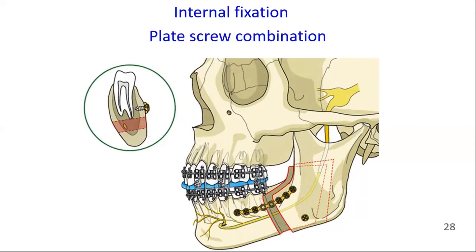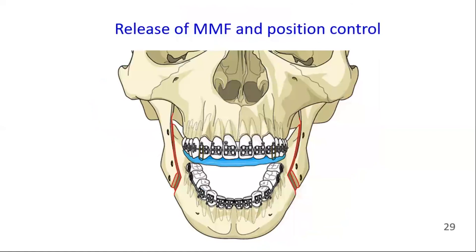A combination of a single plate and a positioning screw — that is, an anti-rotation screw — is also possible. This improves stability against rotational forces. After completion of osteosynthesis on both sides, the MMF is released and the resulting occlusion is checked against the pre-planned position. The splint may be fixed to the maxillary teeth with a few thin wires and left in place during the healing phase to allow for neuromuscular adaptation and position control.